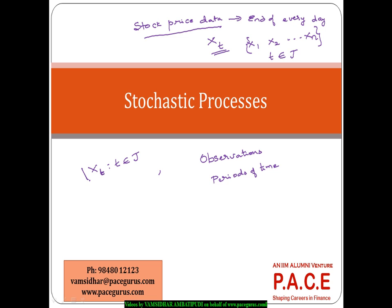This XT represents the different observations of a random variable. We use the term random variable because XT can take different values in a random fashion. This set XT is what we are calling as the state space — the different possible values which our random variable can take. And T, the different time points at which we are observing our random variable, is called the time set or time domain. That is the basic idea in a stochastic process.